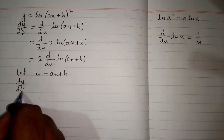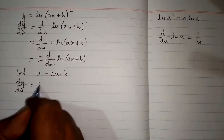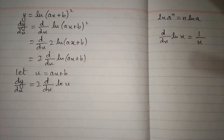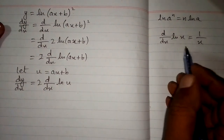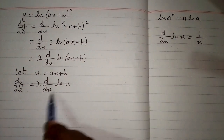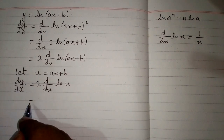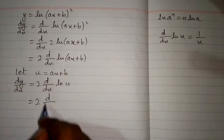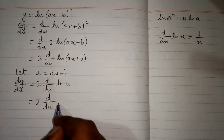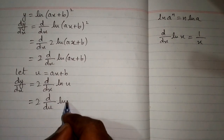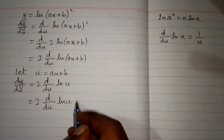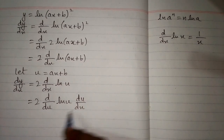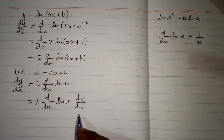The derivative dy/dx equals 2 times the derivative of ln(u). Again, we cannot apply the formula directly because the variables are not the same, so we apply the chain rule and replace dx by du times du/dx. This is the chain rule of differentiation.